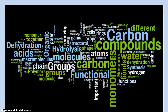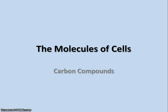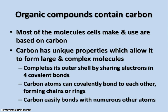This is the first note set for Unit 2, which is about the molecules of cells. The molecules of cells include lots of different things. Generally speaking, they're made of carbon. The backbone of the molecules most often used by cells are made of carbon. Carbon compounds are called organic compounds. Most of the molecules that cells make and use are based on carbon. There are a lot of unique properties that carbon has that allow it to make large and complex molecules.